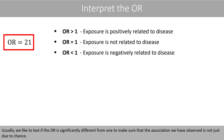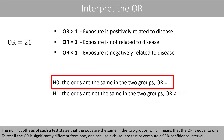Usually, we like to test if the odds ratio is significantly different from 1 to make sure that the association we observe is not just due to chance. The null hypothesis of such a test states that the odds are the same in the two groups, which means that the odds ratio is equal to 1. To test if the odds ratio is significantly different from 1, one can use a chi-square test or compute a 95% confidence interval.